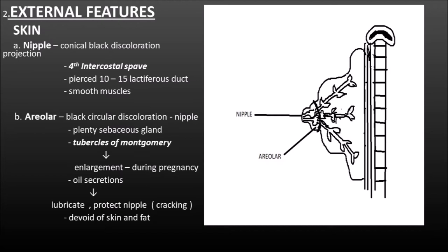Towards your right, you could see a diagram which shows the mammary gland. There is a blackish conical projection which is basically the nipple, and the area surrounding the nipple is the areola. The nipple is basically a blackish conical projection of the skin situated in the fourth intercostal space. It is pierced by 10 to 15 lactiferous ducts and contains smooth muscles. The areola is a circular blackish discoloration around the nipple containing plenty of modified sebaceous glands which enlarge only during pregnancy and are called the tubercles of Montgomery. They secrete oil which lubricates and prevents cracking of the skin over the nipple. The areola is devoid of hair and fat.